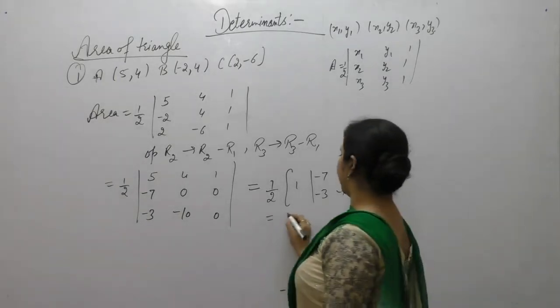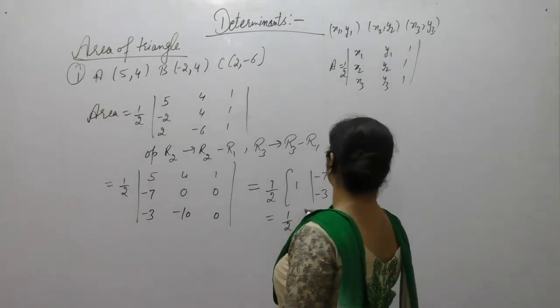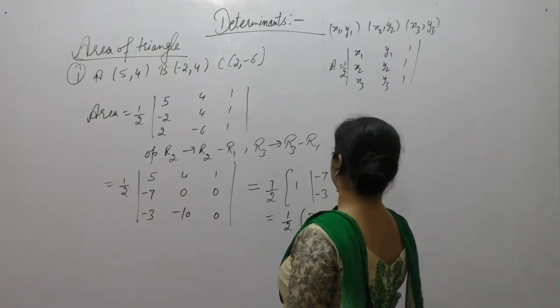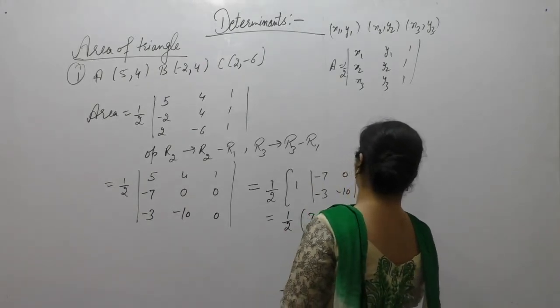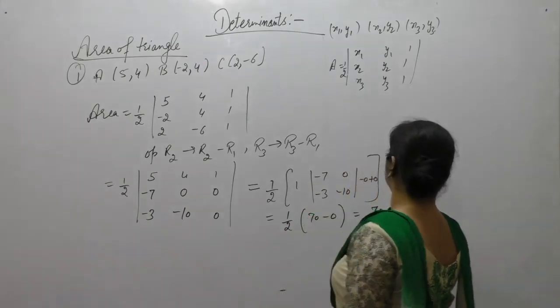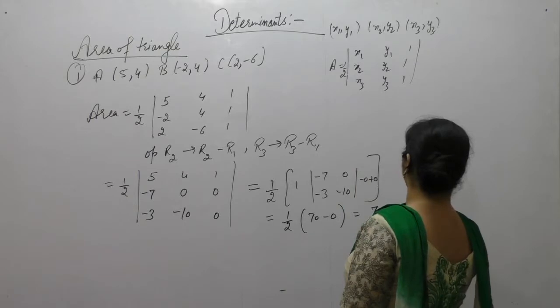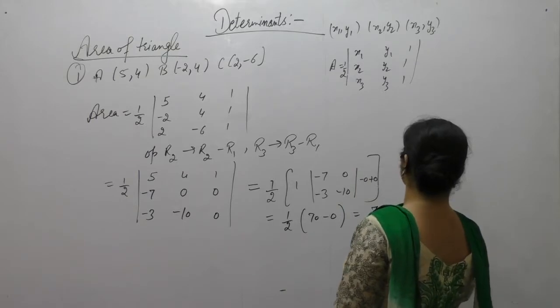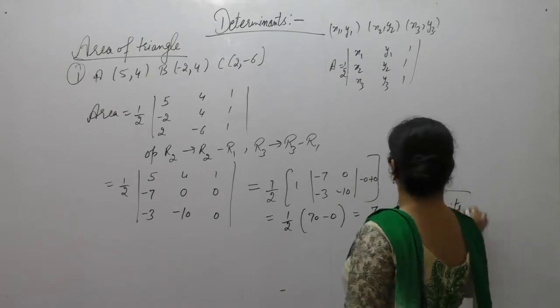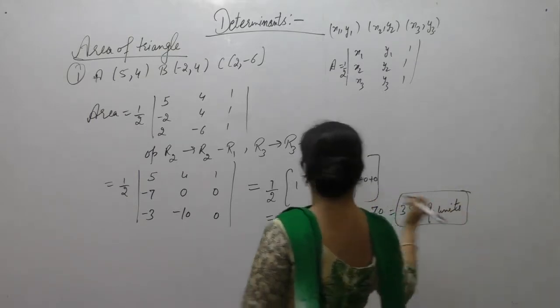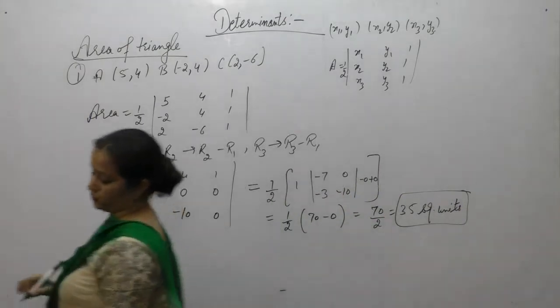So 1/2 times 1 into ((-7)(-10) - (0)(-3)) = 1/2 times 70, which equals 35. Since it is area, the answer is 35 square units.